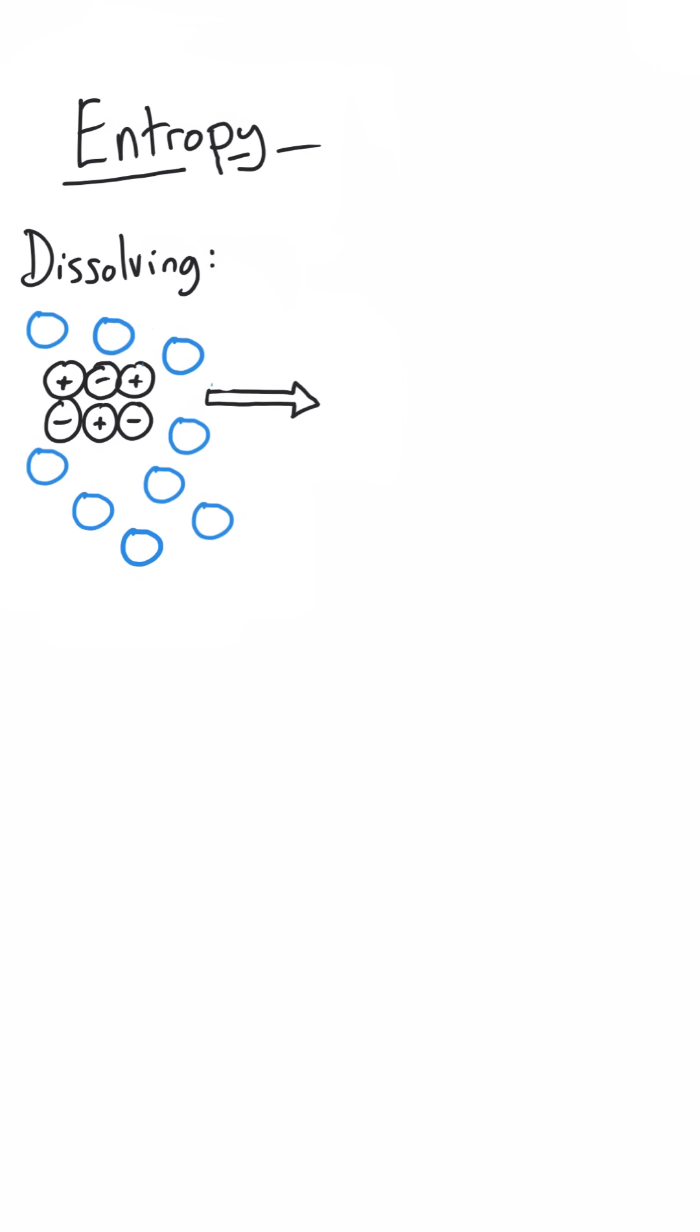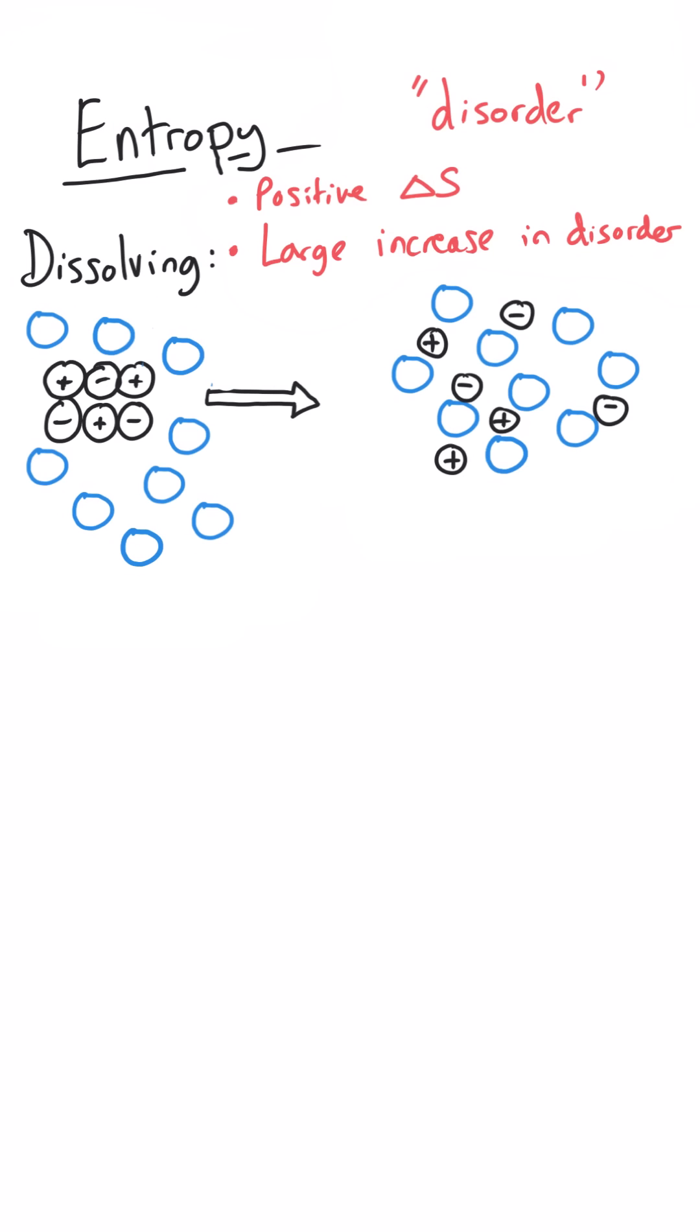And the last way that the required practical ties in with thermodynamics is through the entropy topic. Now remember, entropy is almost synonymous with disorder, but certainly it is from the point of view of A-level chemistry. And so the dissolving that I've been talking about all along the way is incredibly an increase in disorder, because what we have at the beginning of a dissolving experiment is a very regular ionic lattice in solid format being put in with water, which I've just drawn as blue circles. And then once the dissolving has happened, that ionic lattice is completely broken apart and everything is a solution. So there is a dramatic increase in entropy during this experiment.